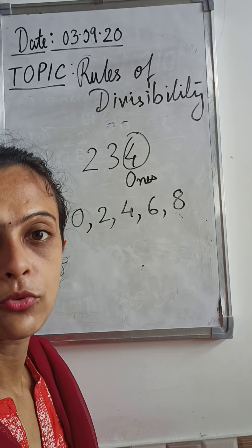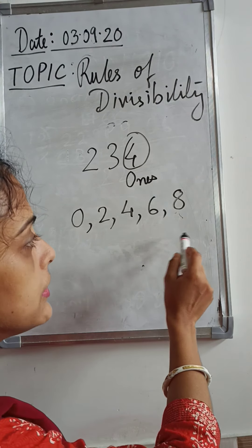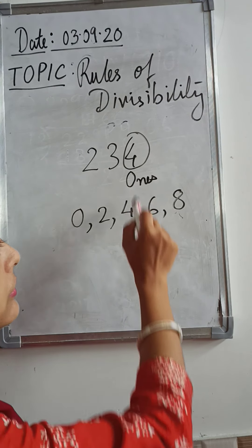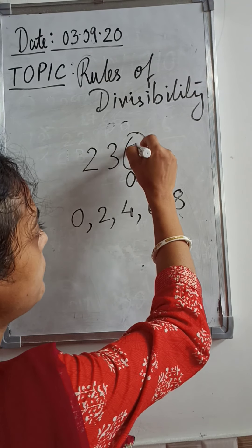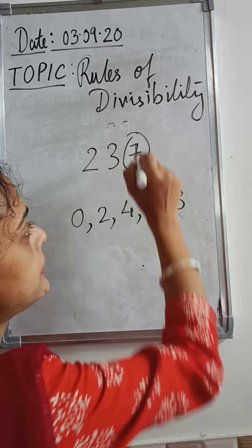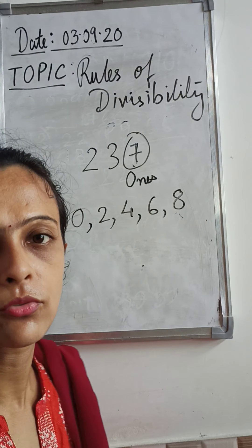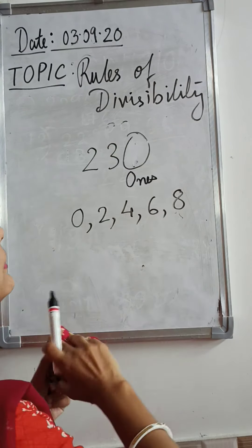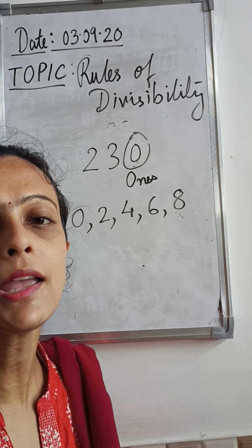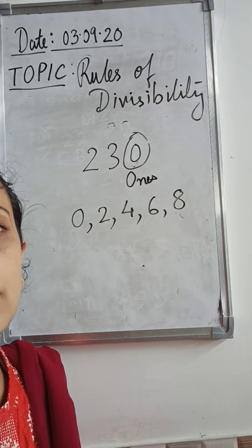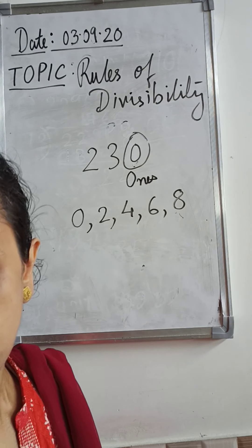To remember which digits work, think of the multiplication table of 2: we get 2, 4, 6, 8, and if there is a 0 at the end, it's also divisible by 2. Since 234 has a 4 in the ones place, it is divisible by 2. If the ones digit were 7, it would not be divisible by 2. And 230 with a 0 at the ones place is also divisible by 2. Whenever the ones digit is 0, 2, 4, 6, or 8, the whole number is divisible by 2.